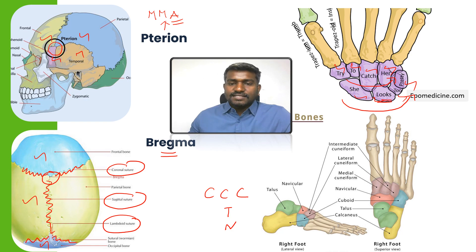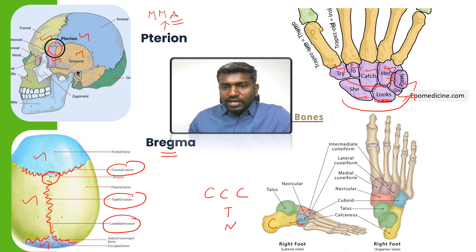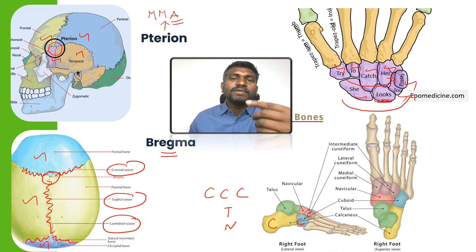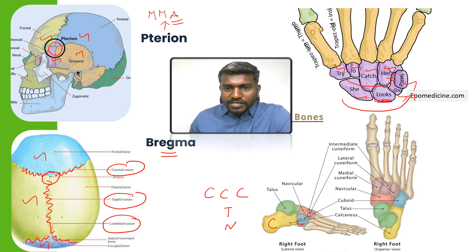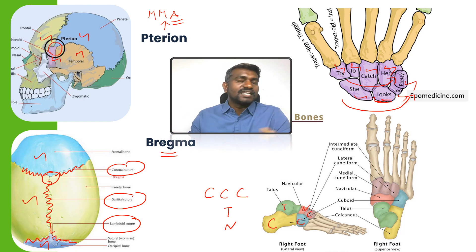Let's revise the tarsal bones with just three letters: CCC and TN. Calcaneum, cuboid, cuneiform — which has medial, intermediate, and lateral cuneiform — then the talus and navicular. Just remember CCC and TN.